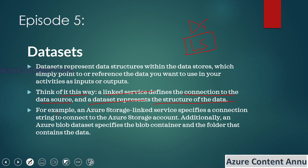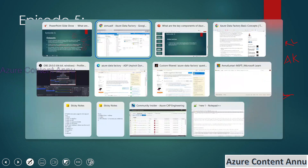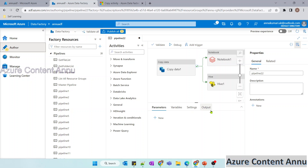For example, if we have a linked service pointing to Azure Storage, it holds the connection information such as the storage account URL and account key. Once that linked service is created, we can create a dataset on top of it. The dataset holds information like which particular folder or file to point to inside which container of the storage account.